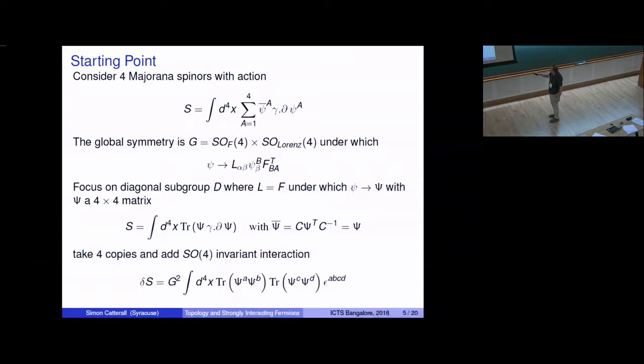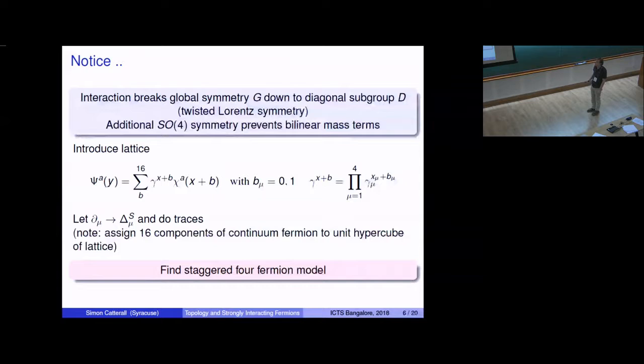Once I introduce this interaction term, that is no longer true. This interaction term is only invariant under the diagonal subgroup. So I'm forcing a twisted Lorentz symmetry through the strong four-Fermi interaction. So the interaction breaks the global symmetry explicitly down to the diagonal subgroup, to the twisted Lorentz symmetry we've used in our discussions of lattice supersymmetry. And furthermore, this additional SO(4) symmetry I put in, this sort of additional external symmetry, prevents bilinear mass terms from being induced in the effective action. So I have a symmetry which, simply, I can't write down any invariant bilinears anymore. So that's just the starting point of the discussion.